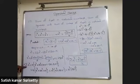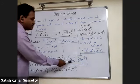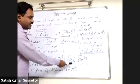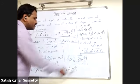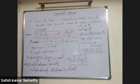Therefore sigma n cubed, the sum of cubes of first n natural numbers, equals n squared into n plus 1 whole squared upon 4.